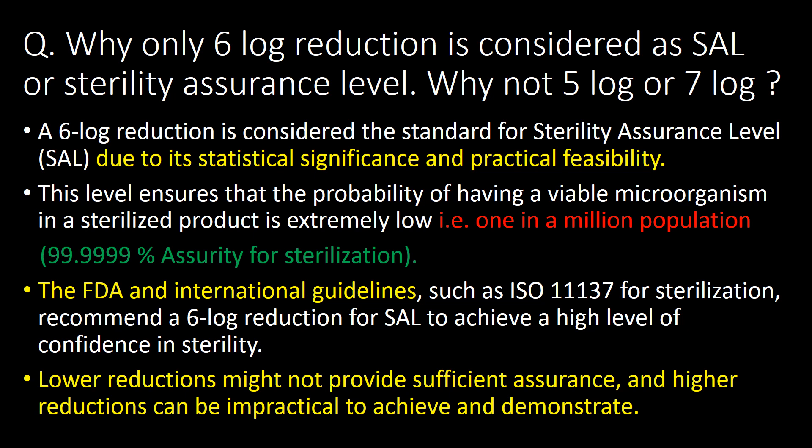It is practically feasible to achieve 6 log reduction with commonly used sterilization methods — that is, dry heat sterilization, moist heat sterilization, and radiation sterilization. This level ensures that the probability of having a viable microorganism in a sterilized product is extremely low, that is 1 in a million. With 6 log reduction, we will be assured 99.9999% sterility.